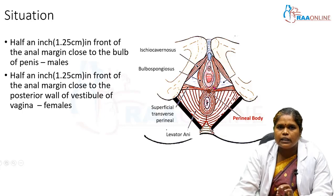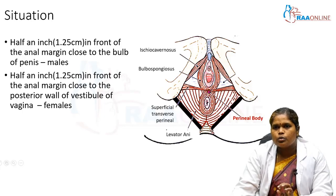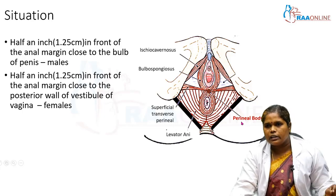In males, the perineal body is situated just close to the bulb of the penis. So that covers the situation of the perineal body.